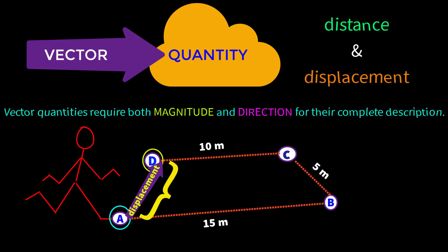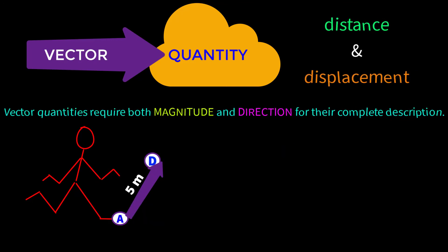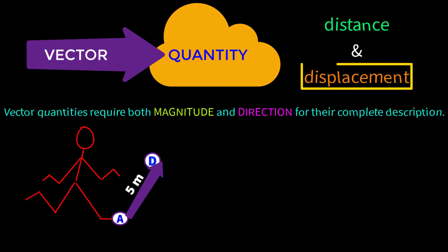Suppose this distance is 5 meters. So the displacement of the boy will be 5 meters only, not this 30 meters. This line segment will be the magnitude of displacement and this arrowhead will be its direction. So we can say that displacement is a vector quantity, since to completely describe displacement we need both magnitude and direction.